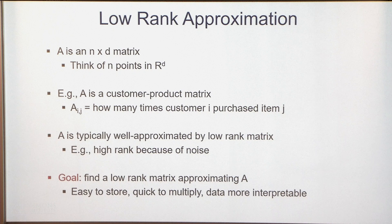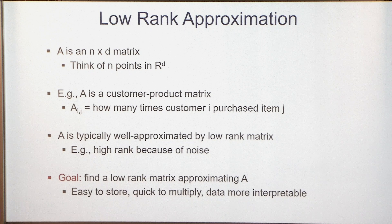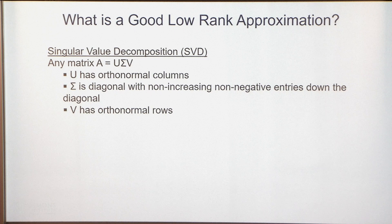A low-rank matrix is easy to store in factored form — it has many fewer parameters. If it's an N by K times a K by D matrix, I only have N plus D times K parameters. It's quick to multiply by because you can multiply a vector by each factor in turn. And if A is only high-rank because of noise, you can think of this low-rank factorization as denoising your data. So what is a good low-rank approximation?